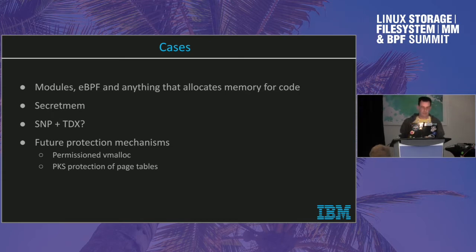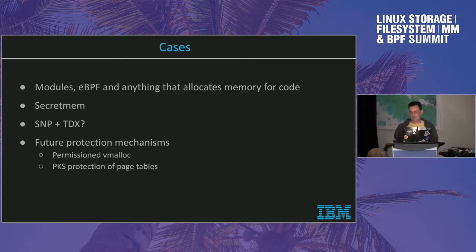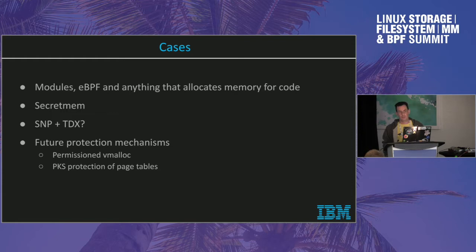Cases that fragment the direct map as of now include anything that allocates code like modules, BPF programs, F-trace, and K-probes. There is secret memory. A recent email mentioned a potential use case for reducing direct map fragmentation for SNP and TDX — I can't say I fully understand how. As we go more and more secure, there will be additional protection mechanisms using set memory operations to change permissions on ranges of the direct map, which will make the situation worse. For example, RickH posted a patch about using PKS for page table protection, which also requires 4K pages.